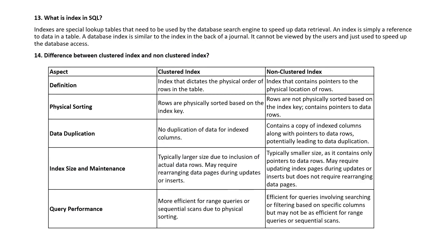What is an index in SQL? An index is a special lookup table used by the database search engine to speed up data retrieval — it is simply a reference to data in a table, similar to the back of a book. What is the difference between clustered and non-clustered index? A clustered index determines the physical order of rows in the table, whereas a non-clustered index contains a pointer to the physical location of the row. Rows are physically sorted based on the index key in clustered, but not in non-clustered.